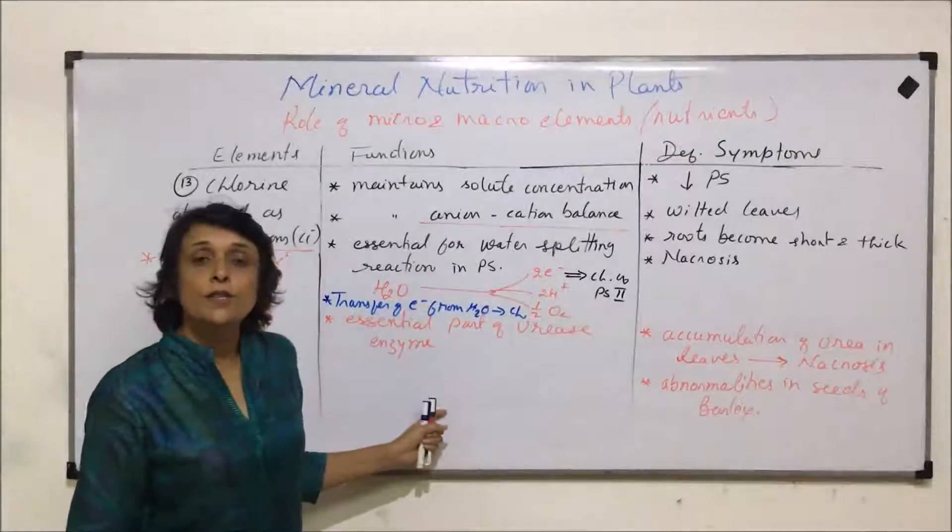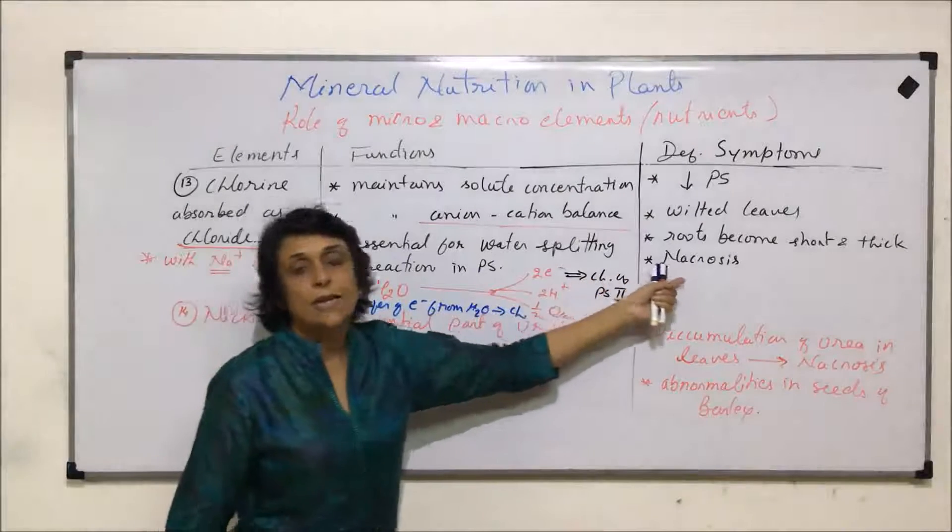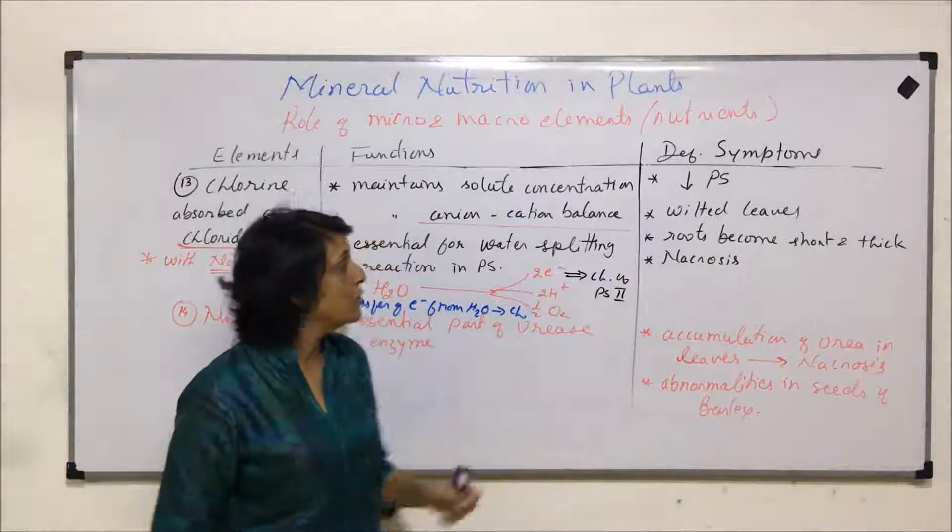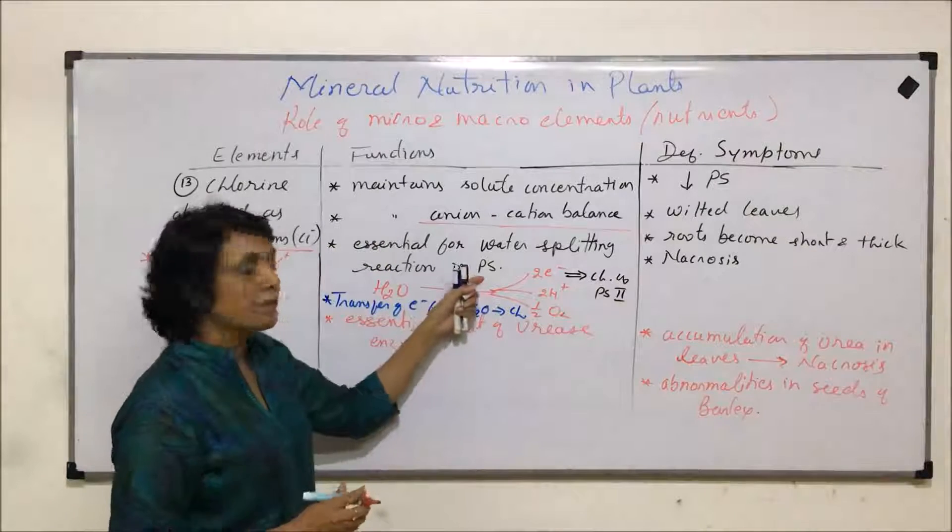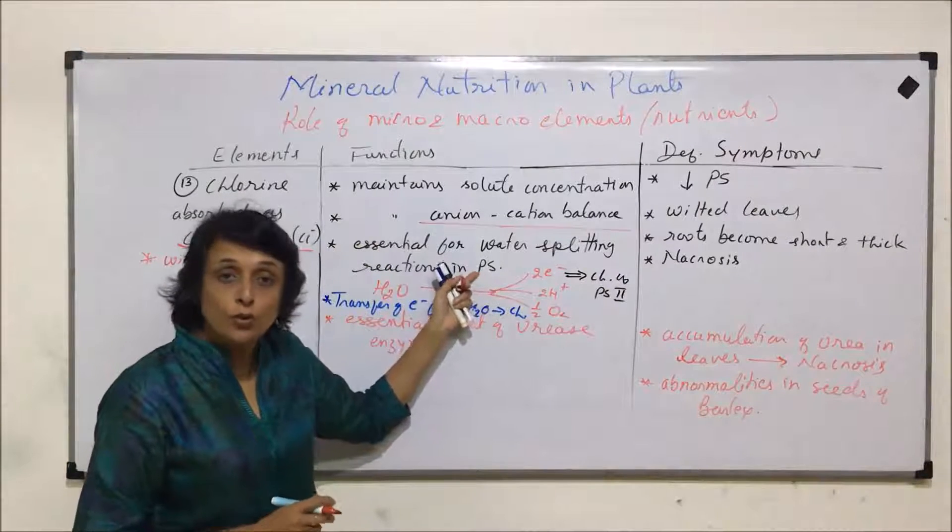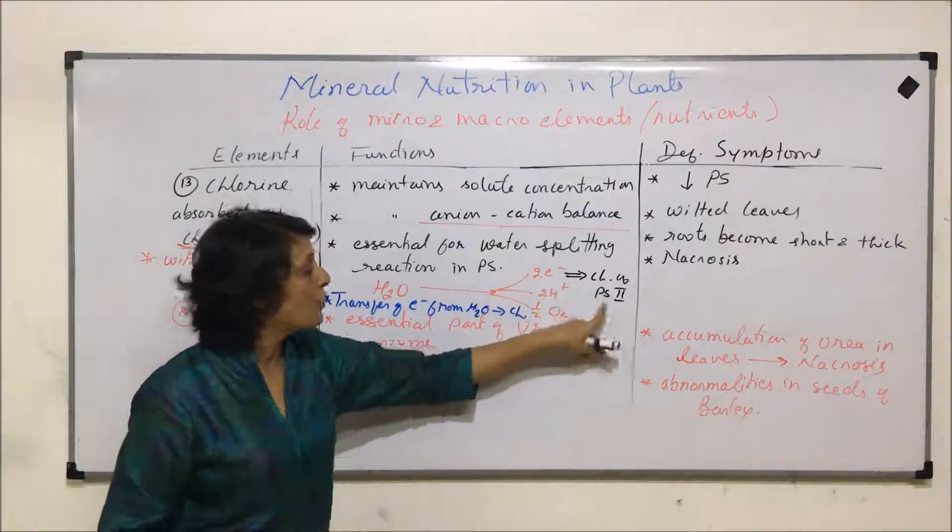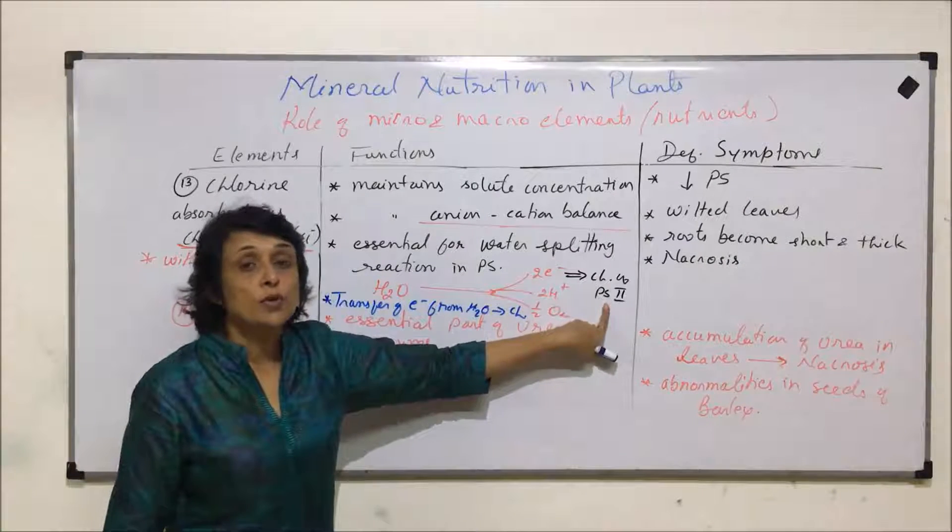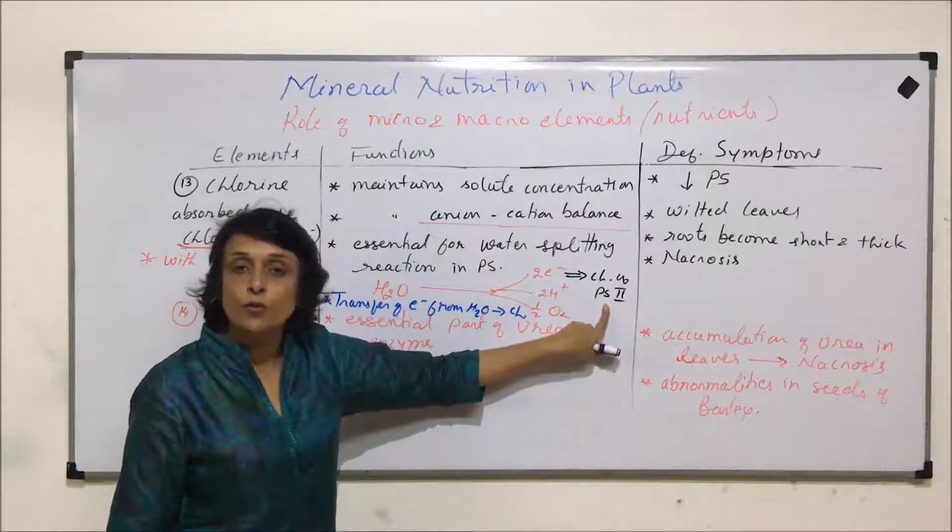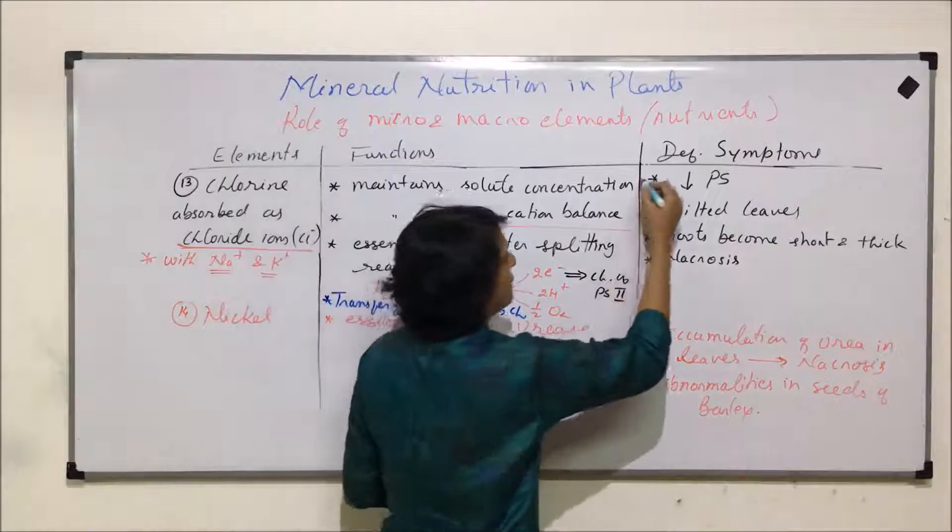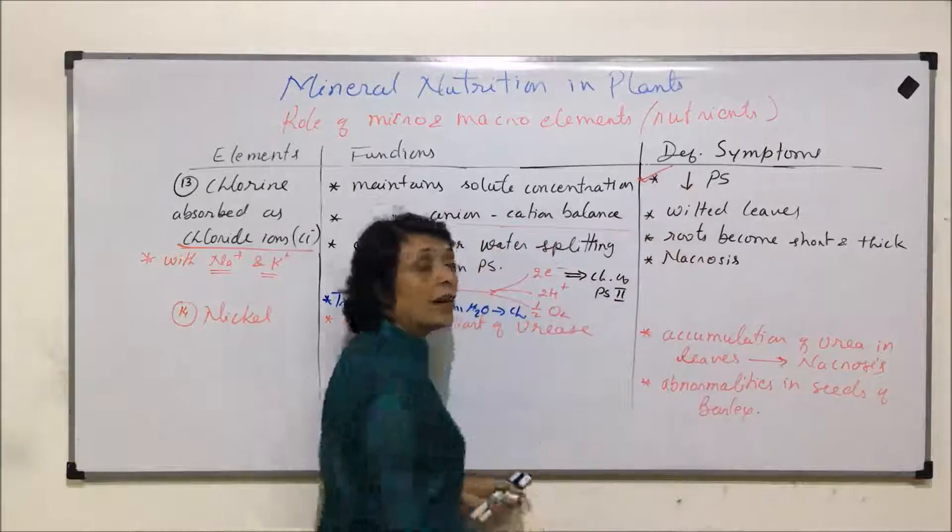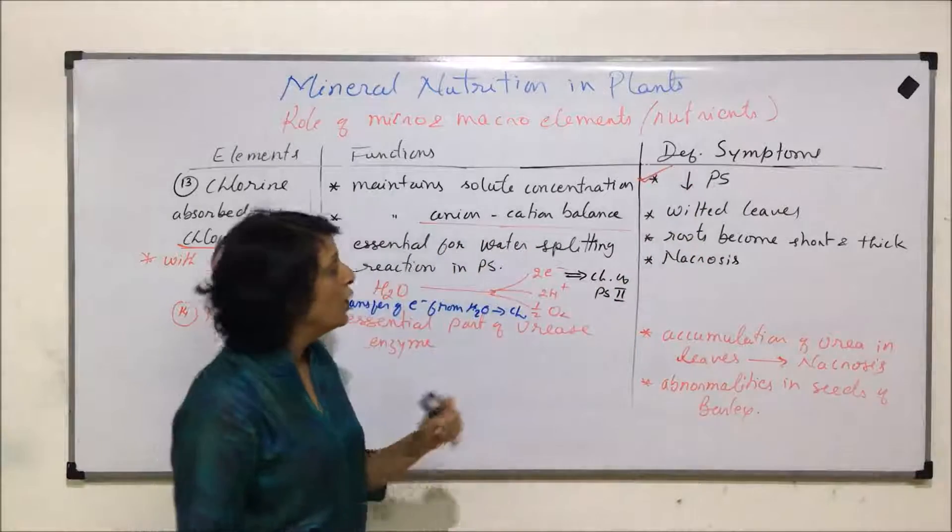The deficiency symptoms due to less concentration or absence of chloride ions would be, because we have seen its role in photosynthesis, unless the electron is given to chlorophyll of PS2, photosynthesis, especially the non-cyclic photophosphorylation would not start. In the deficiency situation, rate of photosynthesis would be lowered.